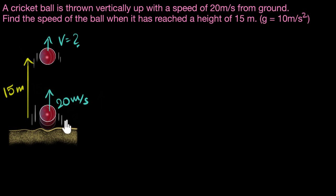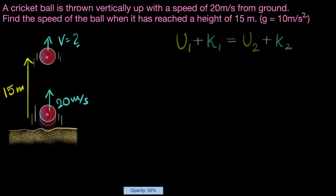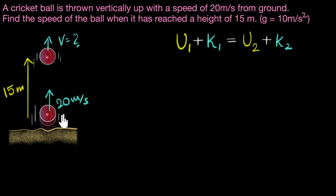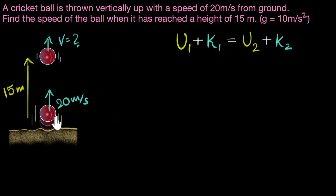We can say that the total energy at point one should equal the total energy at point two. Mathematically, potential plus kinetic at point one equals potential plus kinetic at point two. Let's call the ground position point one and the position at 15 meters point two. We need to calculate the velocity at point two.